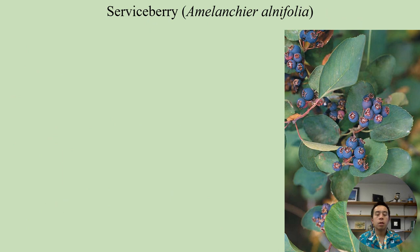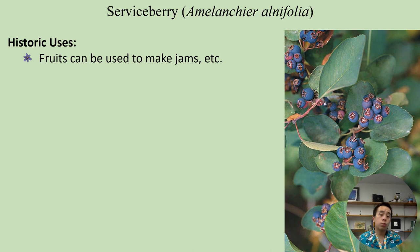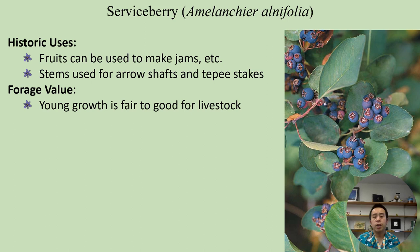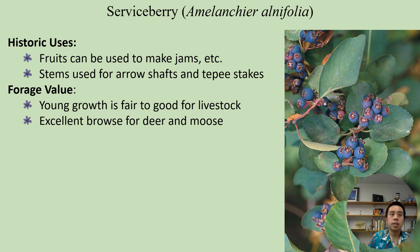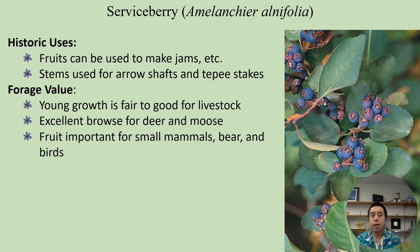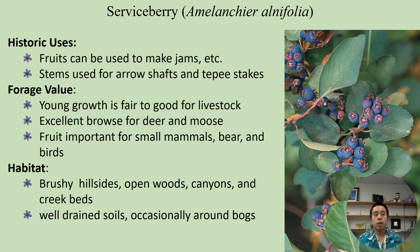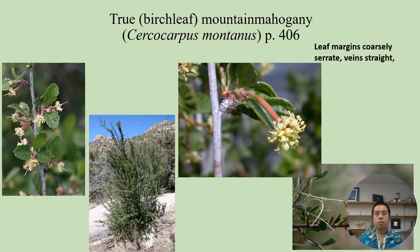Historically, Amelanchier alnifolia fruits were used to make jams and other foods, and the stems were used to make arrow shafts and tipi stakes. In terms of forage, young growth is often fair to good for livestock, and it's considered excellent browse for deer and moose. Fruits are also important for small mammals, bears, and birds. Habitat-wise, it often occurs on brushy hillsides, open woods, canyons, and creek beds, typically preferring well-drained soils, although it occasionally occurs around bogs.